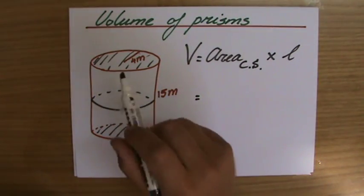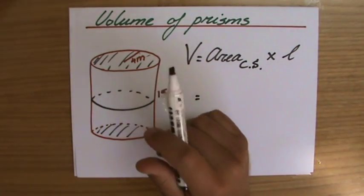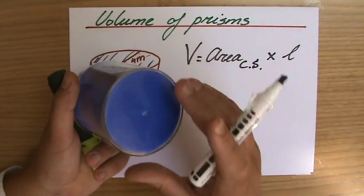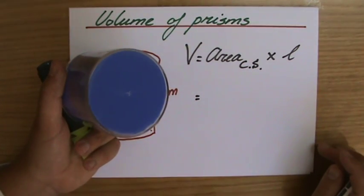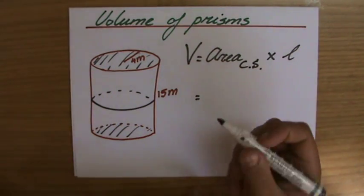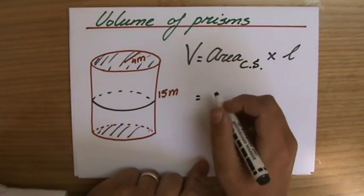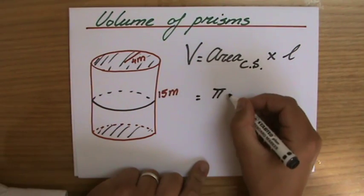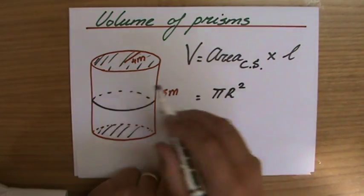Now what is the cross-section in this particular case? What kind of figure is that? A triangle? A rectangle? You agree with me that is a circle. And how do I find the area of the circle? Well, we know that now - that's an important formula - that is πr².